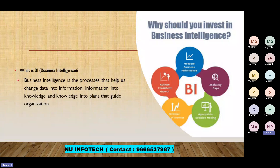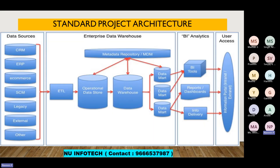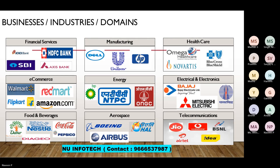To summarize what we've covered: what is business intelligence, what is its use, and the pictorial flow of a BI project. The three examples used were Amazon (e-commerce domain), ATM transactions (financial domain), and phone calls (telecommunications domain).